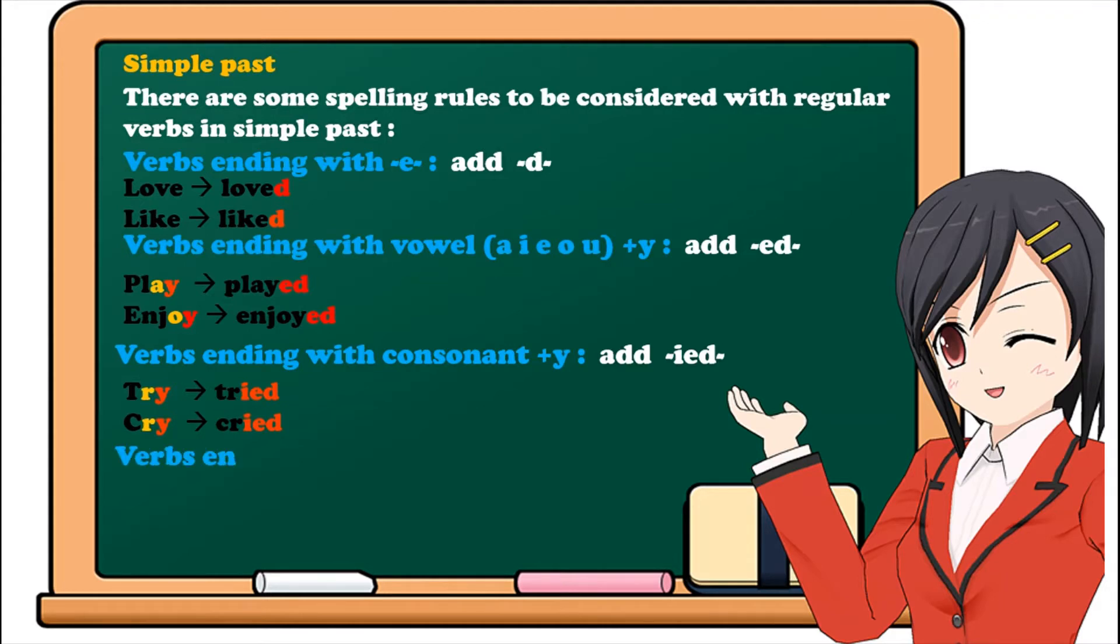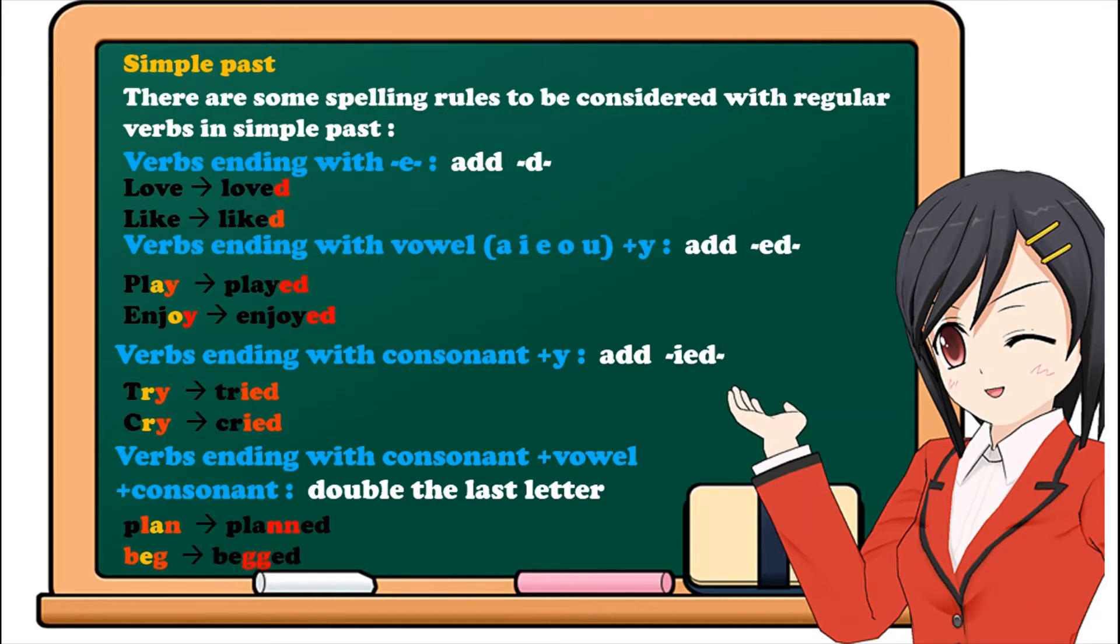For verbs ending with consonant plus vowel, the consonant, we double the last letter or the last consonant. For example, plan, planned. Beg, begged.